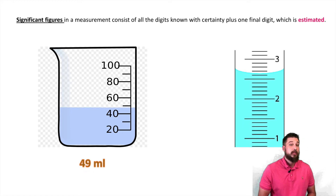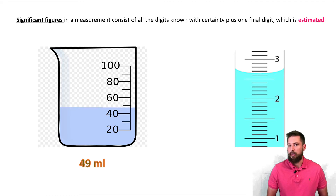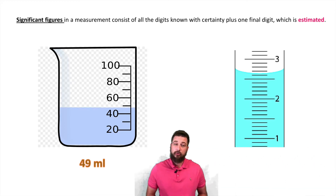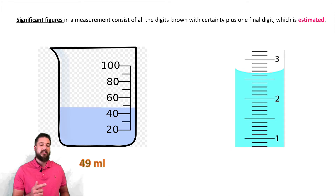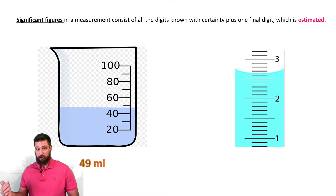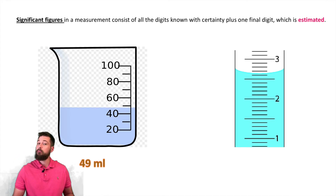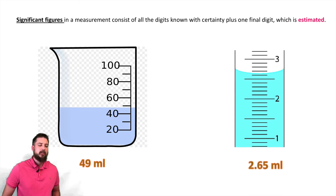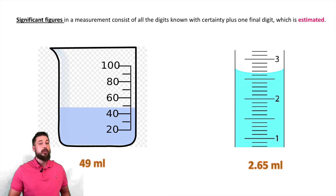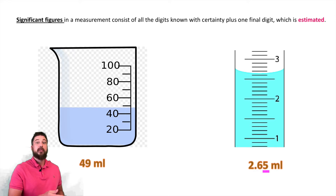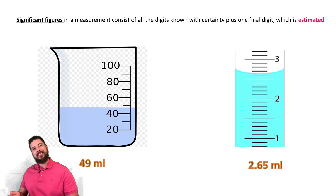Now let's look at the graduated cylinder on the right. What is it counting by? It's counting by tenths — point one. We can say for sure it's 2.6 but not 2.7. Because it's right between 2.6 and 2.7, we can estimate it's 2.65. We know it's 2.6 for sure, and we estimate the five. In the beaker, it's 49 — for sure 40, and we estimated the nine.